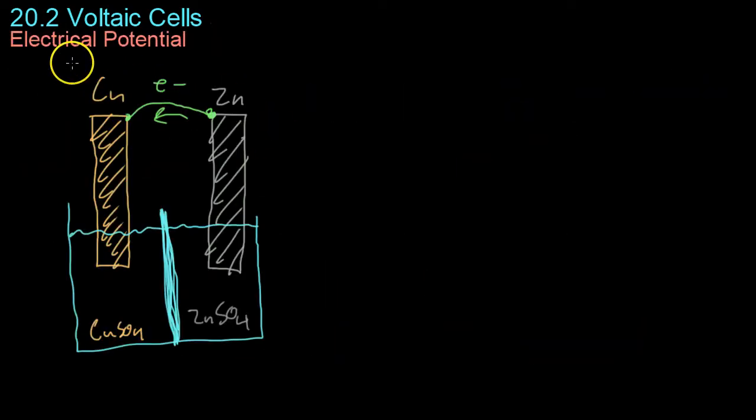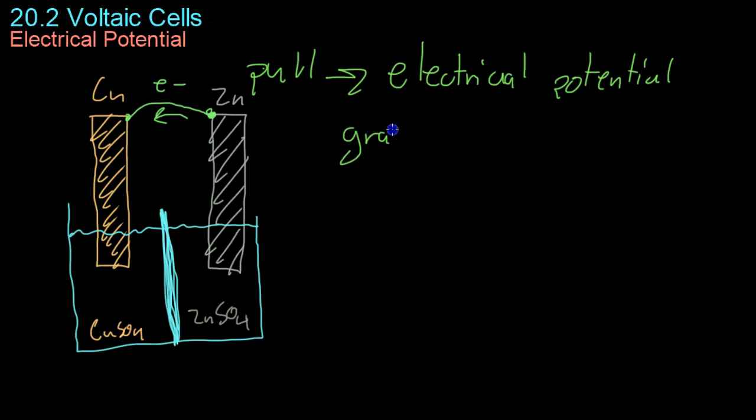Moving on to electrical potential, as we've already said, if you have this copper-zinc circuit, electrons will be pulled from where zinc is oxidized and the electrons are let go to where the copper is reduced. This pull is what is known as electrical potential. Much like gravitational potential, they'll move from an area of high potential to an area of low potential.